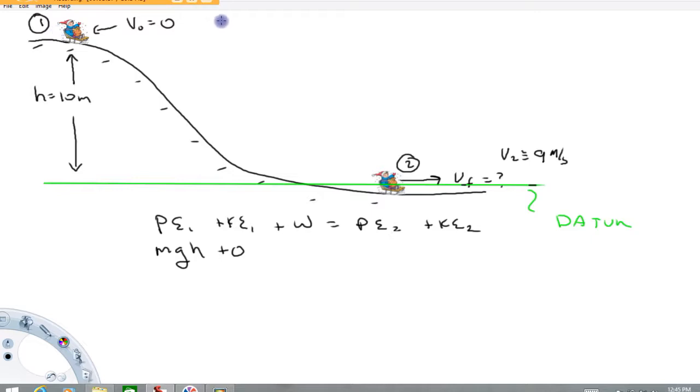So the mass of that sled and child is probably approximately, let's say that child's maybe 40 kilograms and maybe we'll add 10 more for the sled and clothes and whatnot. So let's say the mass of the system is approximately 50 kilograms, give or take.